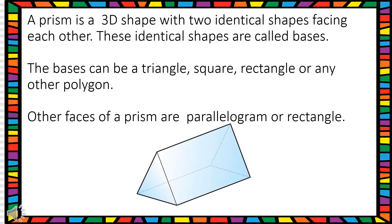A polygon is a closed shape which is made up of straight lines. The other faces of a prism are parallelogram or rectangular.